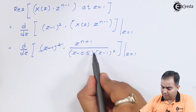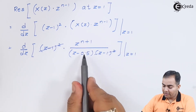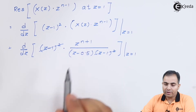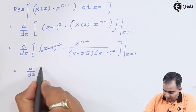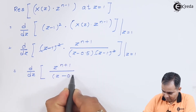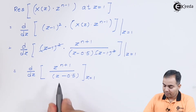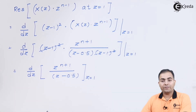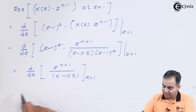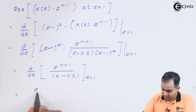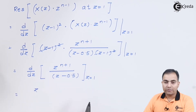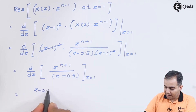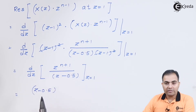The Z minus 1 whole square in the numerator and denominator cancels. What remains is Z to the power n plus 1 over Z minus 0.5. We will now differentiate this numerator and denominator with respect to Z. We recall the u over v differentiation rule: v times the derivative of u, minus u times the derivative of v, all over v squared. So here, Z minus 0.5 is v and Z^(n+1) is u. First, u is differentiated while v is kept constant.